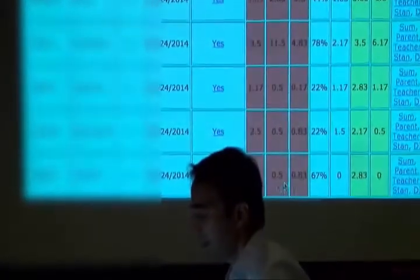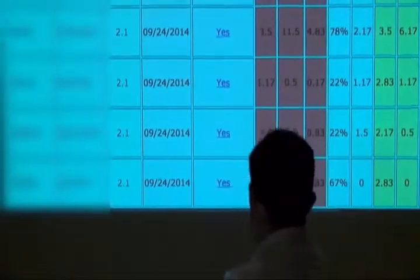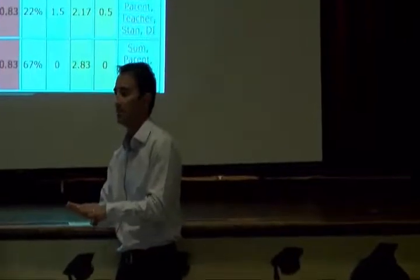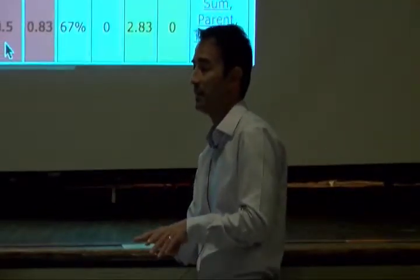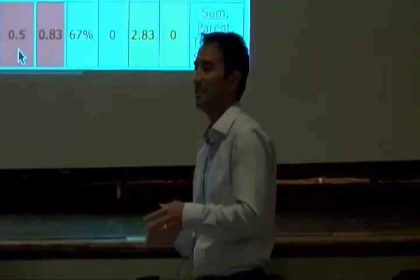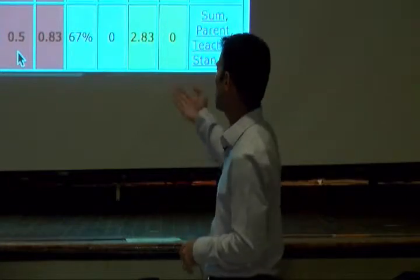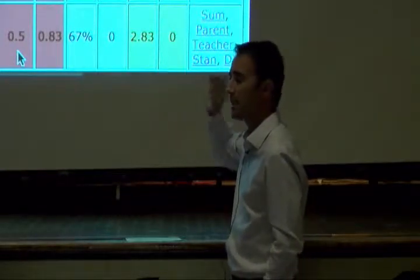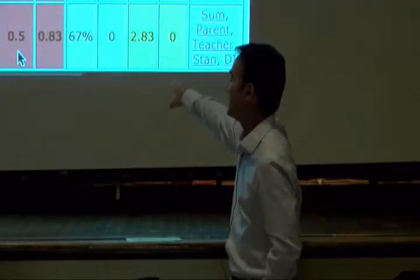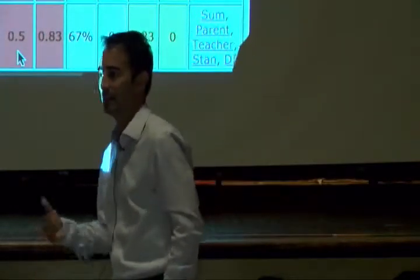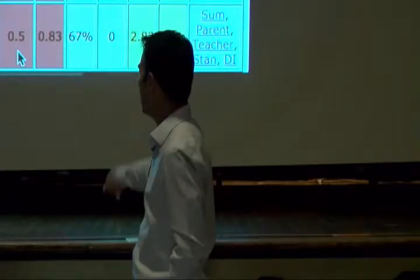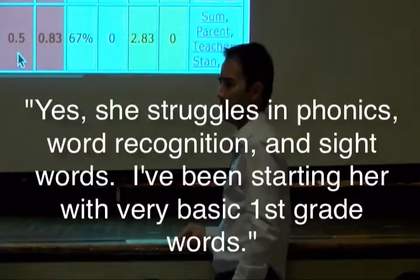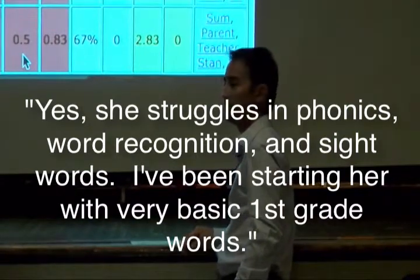One student had a .5 on sight words — the lowest score. She didn't even master the first set. Remember, it's not just one item — it's at least eight items, and she had non-mastery on those eight. She may have gotten 6 out of 8 and needed 7. Under regular word recognition, which is untimed, she also had a .5. In phonics she's at .83, which is beginning sounds.